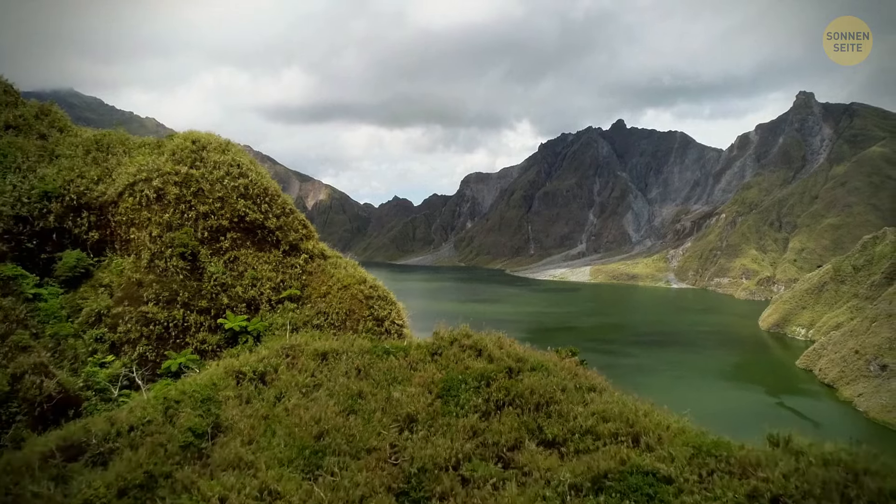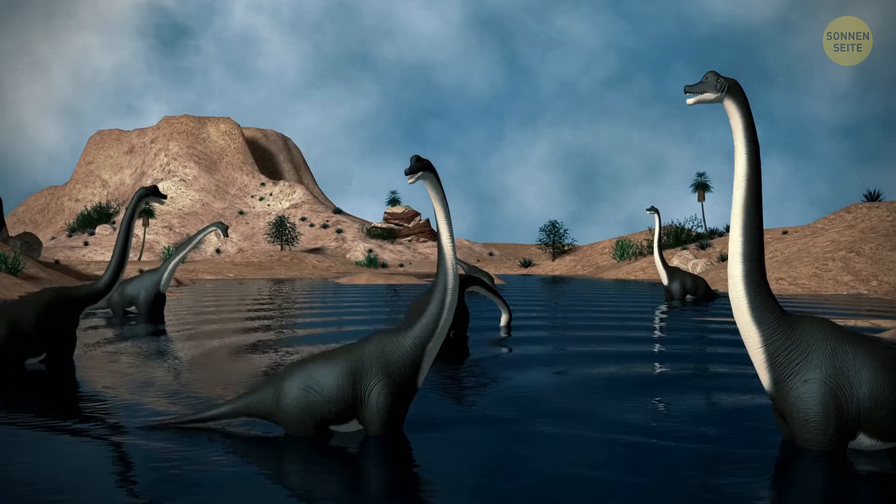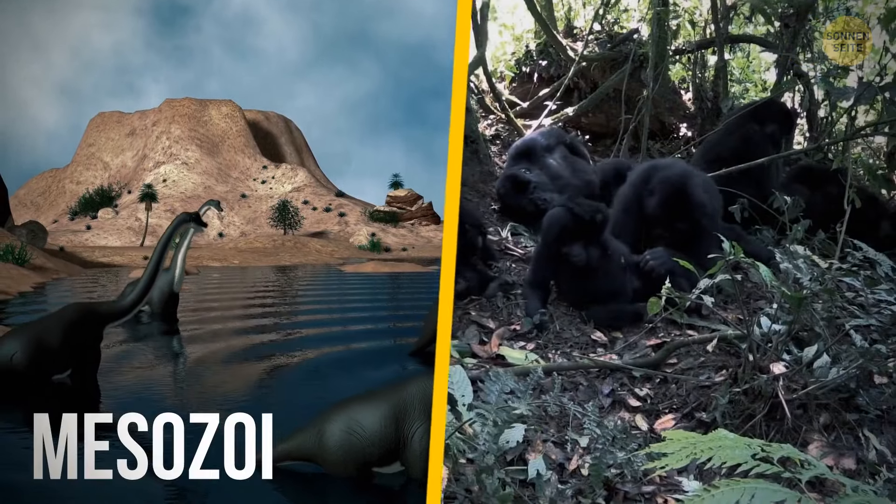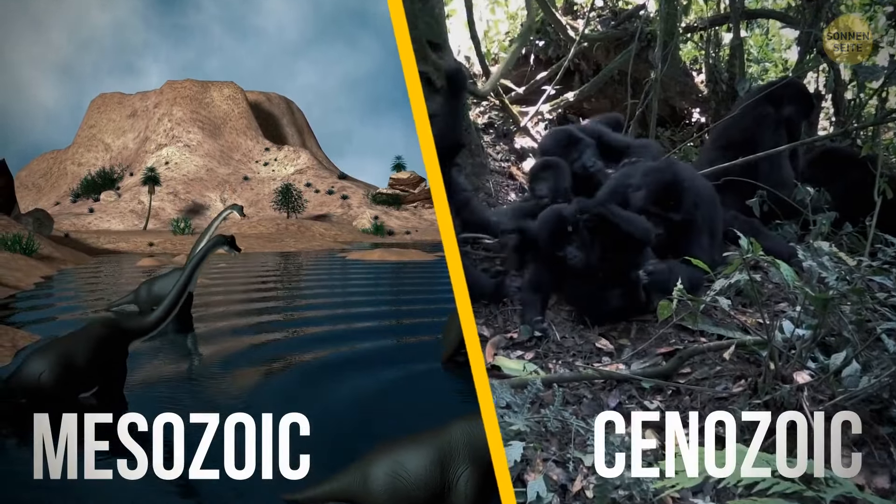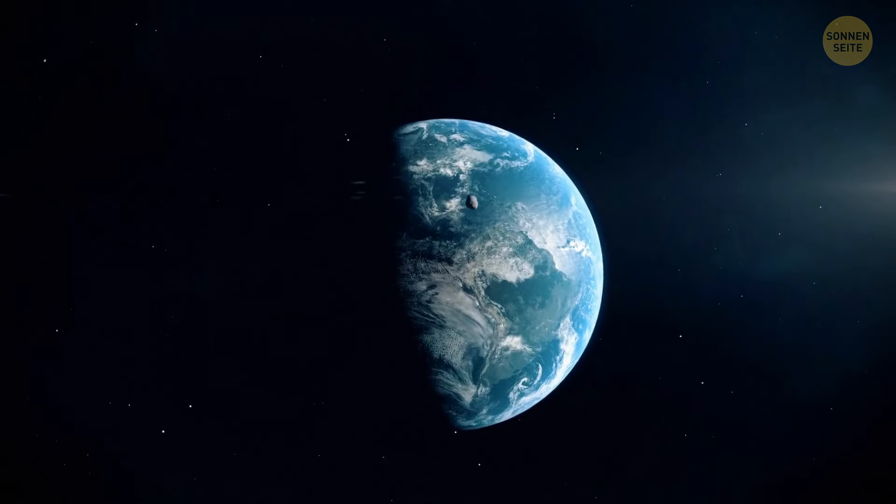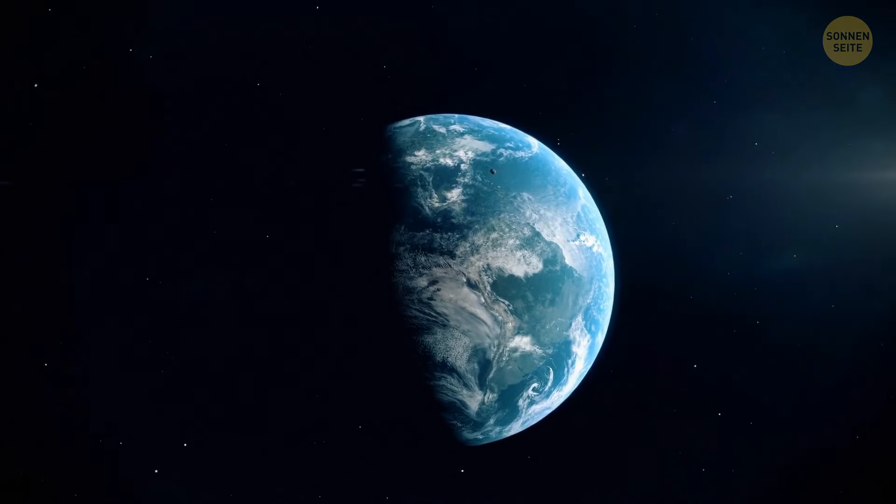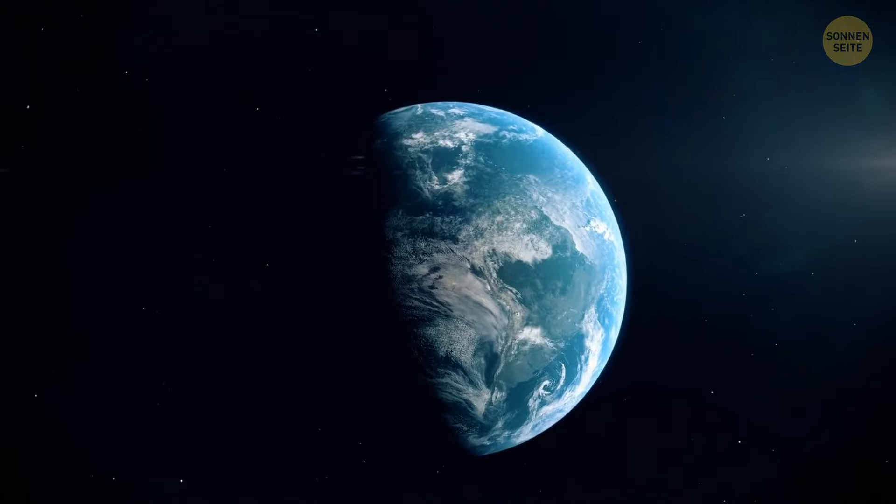Sounds horrific, doesn't it? And of course, it caused one of the greatest extinctions in the history of the Earth's biosphere. Amazingly, the Earth was able to recover after such a catastrophe. This event became the boundary between the Mesozoic and the Cenozoic eras. So now, those who wondered how could a small meteorite destroy all the dinosaurs probably understand the answer.